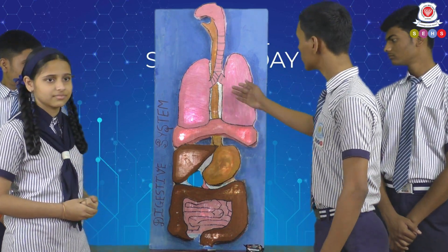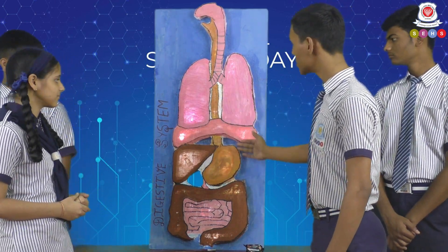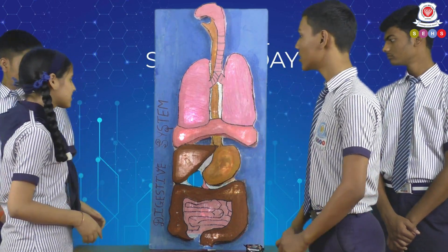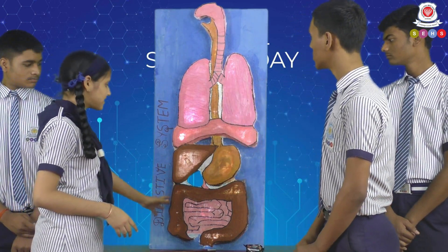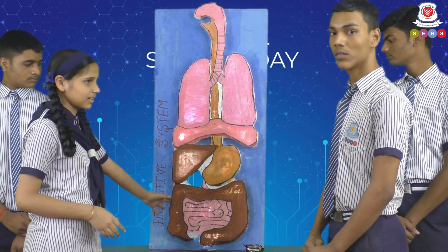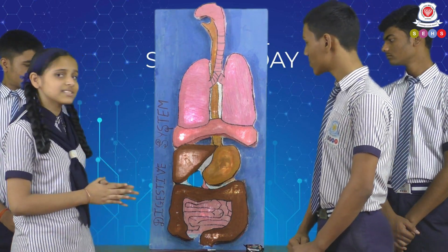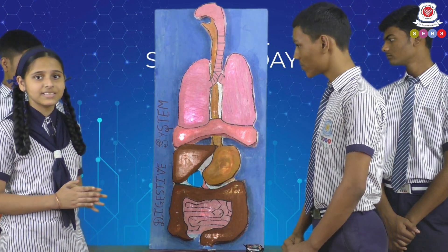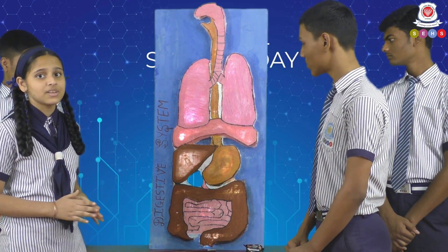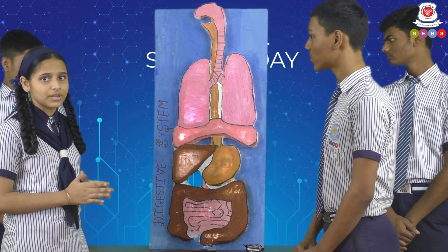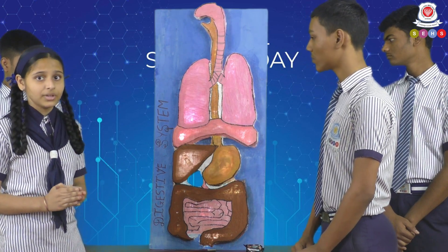What happened after the food passed into the stomach? The stomach is also called as the mixer or the grinder. The stomach secretes powerful acids and enzymes which help in the breaking down of the food.